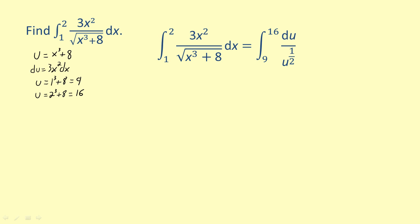To make integrating a little easier, let's rewrite the integrand as u to the negative one half. Now let's integrate. We get 2u to the one half evaluated from 9 to 16.